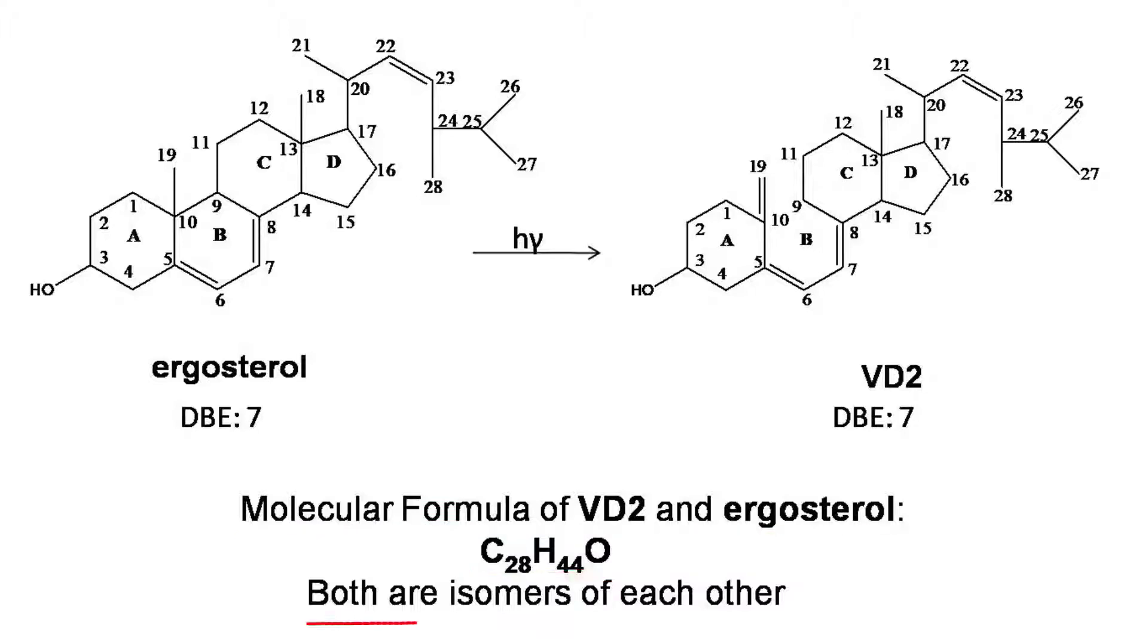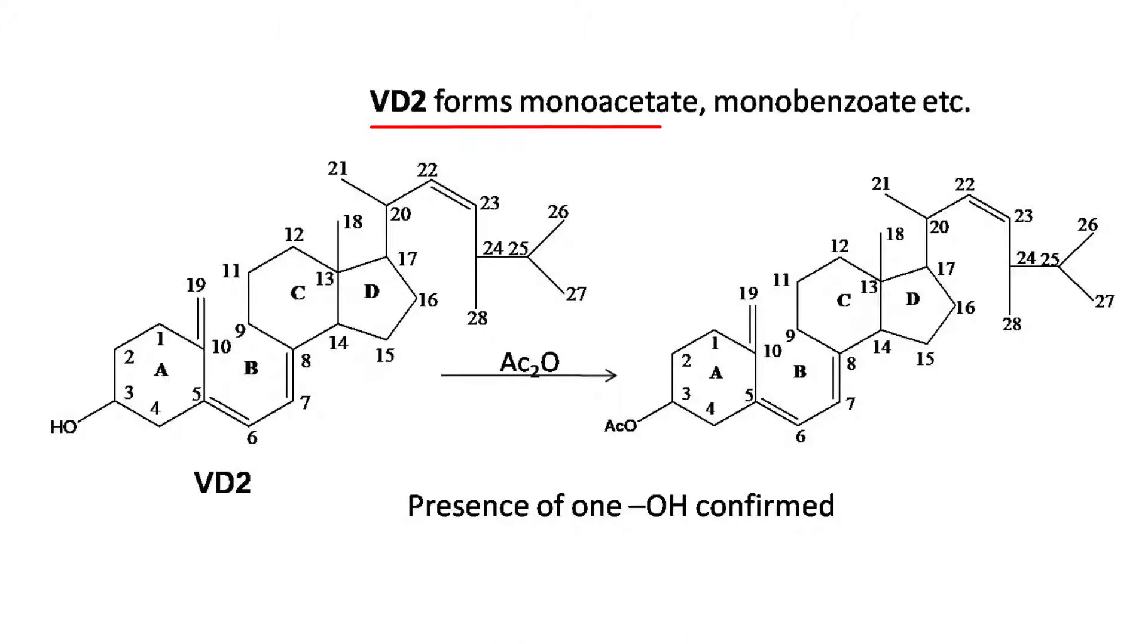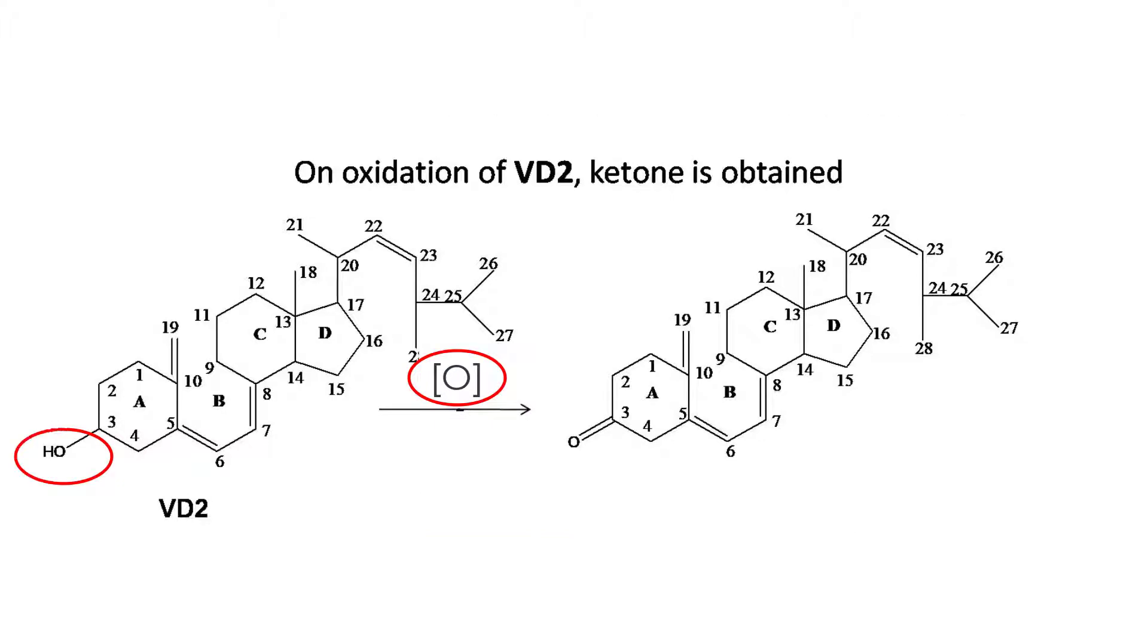Vitamin D2 forms monoacetate, monobenzoate, etc. Vitamin D2 on reaction with acetic anhydride forms an acetate. This confirms the presence of an OH group. On oxidation of VD2, ketone is obtained.